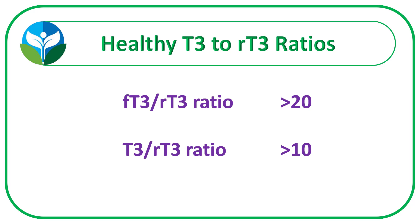So how do we know if we have too much reverse T3 in our system? Here are a couple of good equations. We have free T3 divided by reverse T3, and it's a ratio that should be greater than 20. And if you want to use just regular T3, the protein bound, that's T3 divided by reverse T3, which should be greater than 10.